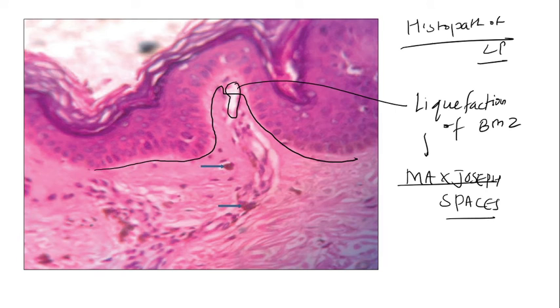And a very interesting phenomena is that if this is the basement membrane zone where you have got a Max-Joseph space and here there was a melanocyte, through these Max-Joseph spaces, these melanocytes fall off into the dermis. And once they fall off and settle into the dermis, you can see in this histopath also, these brownish colored pigments, brownish colored cells are your melanocytes.